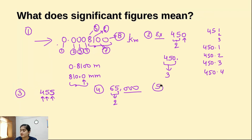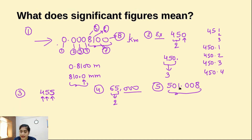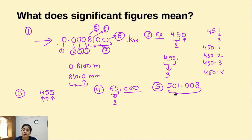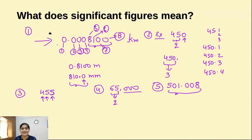Now one more example: suppose we have the value 501.008. In this example, all digits are significant figures. Because the starting value shows how precise you can measure — up to 501 — and after the decimal, how much you can measure is shown by .008. So if the value goes up to this limit, you can measure up to that level, meaning 0.008 precision using some particular device. All 6 digits are significant digits. So here we have studied what exactly significant figures means. In the next video we will see the thumb rules of significant figures. Thank you very much.